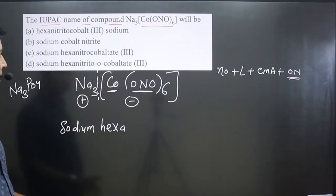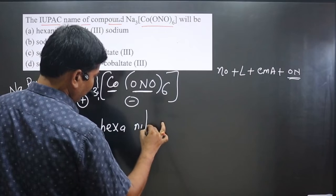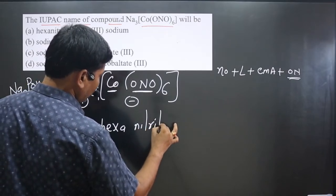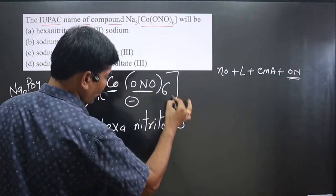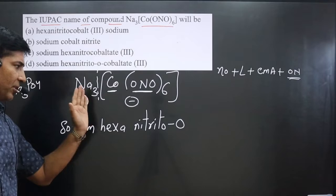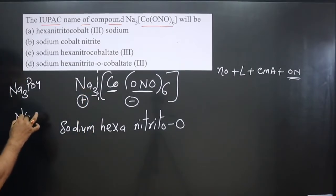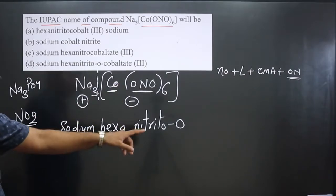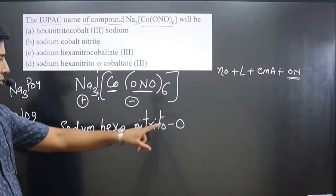The IUPAC name for this is nitrito, and we mention O because oxygen is forming the bond with the central metal atom. If we have NO₂, we mention nitro-N, and if we have ONO, we mention nitrito-O. Nitrito-O shows that it is forming one bond with the central metal atom via oxygen.